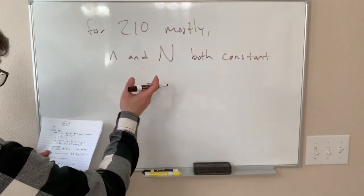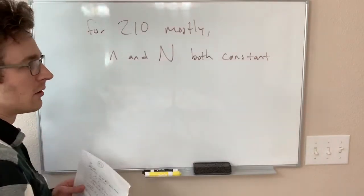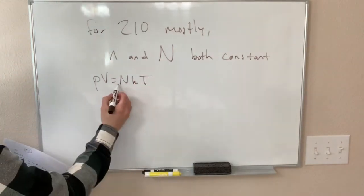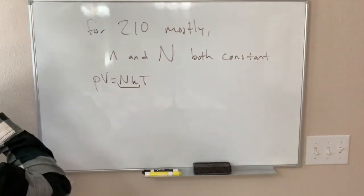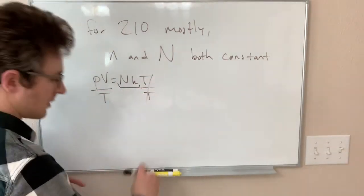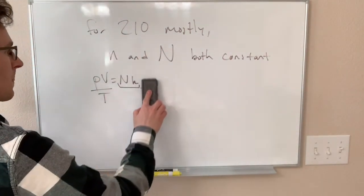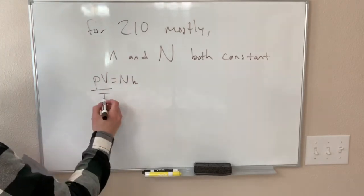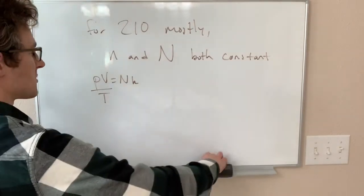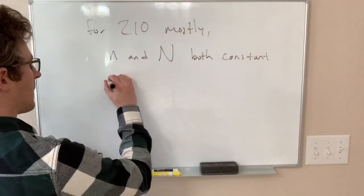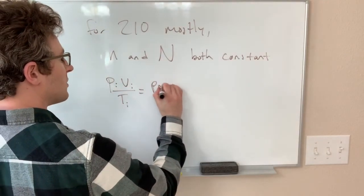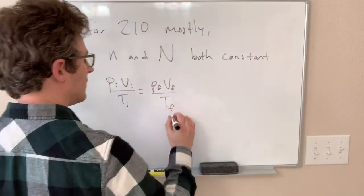What that means is we can write our—well, let's go back to our ideal gas law just for a second. If N is staying the same and K is staying the same, that means if we divide both sides by T, T over T cancels. That means this PV over T is staying constant no matter what we do to our system, as long as we're not changing the number of particles. So, we can write that as P initial V initial over T initial equals P final V final over T final.